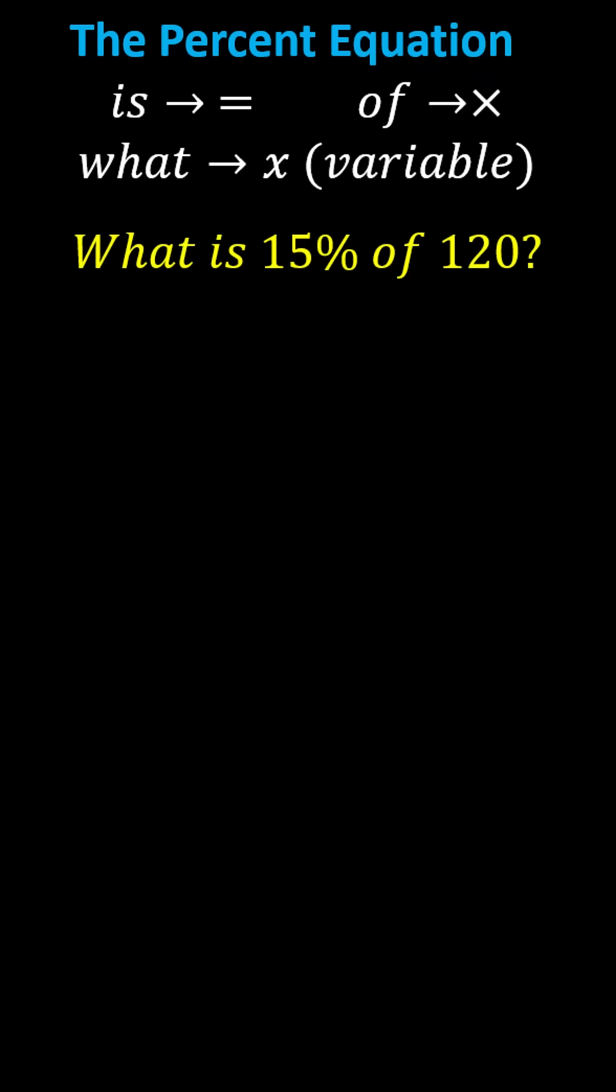First, let's consider: what is 15% of 120? To write the equation, for 'what' we'll use x. 'Is' means equals. We express 15% as a decimal, which is 0.15. 'Of' means multiply, and then we have 120.